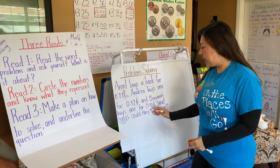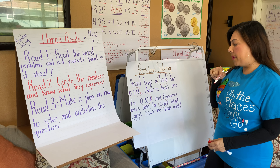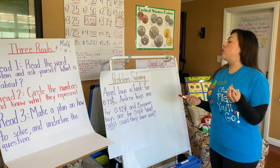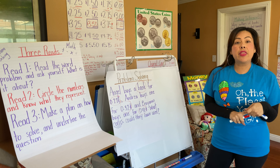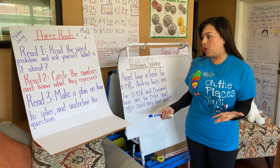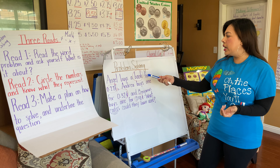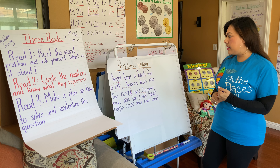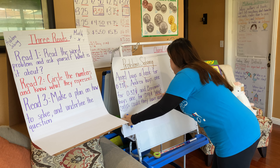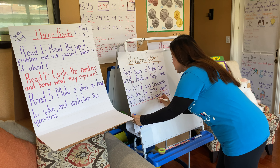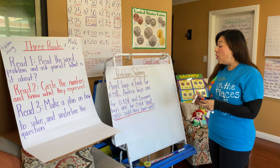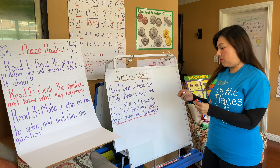First I want to know what is the problem about. I read it and I think it's about Angel, Andrea, and Benjamin buying books. The second time I read it, I'm going to circle the numbers and know what they represent. I have 27 cents — that represents the book Angel wants to buy. Then 32 cents — the book Andrea wants to buy. And 41 cents — the book Benjamin wants to buy. So the numbers represent money and books that Angel, Andrea, and Benjamin want to buy.